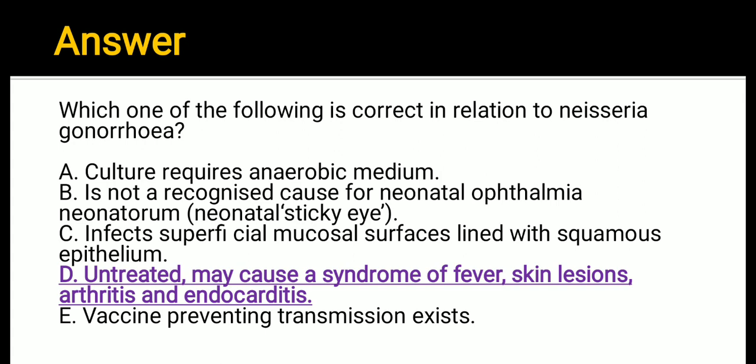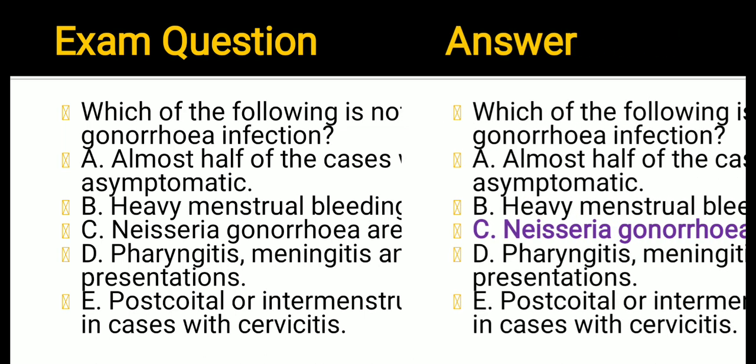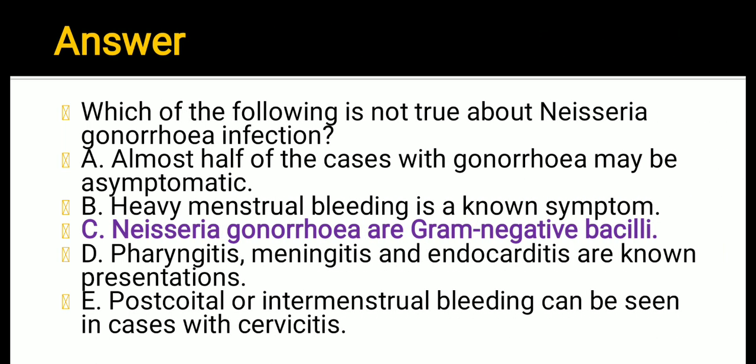Another exam question: Which of the following is NOT true about Neisseria gonorrhoeae infection? A: Almost half of cases with gonorrhea may be asymptomatic. B: Heavy menstrual bleeding is a known symptom. C: Neisseria gonorrhoeae is a gram-negative bacillus. D: Pharyngitis, meningitis, and endocarditis are known presentations. E: Postcoital or intermenstrual bleeding can be seen in cases with cervicitis. The answer is C — Neisseria gonorrhoeae is a gram-negative intracellular diplococcus, not a bacillus.